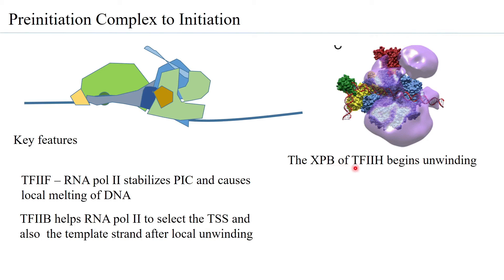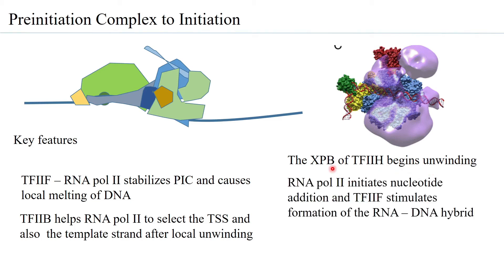The XPB of TF2H then begins unwinding, requiring ATP and its helicase activity. Because of the DNA opening first by TF2F and then finally by TF2H, the open complex is formed. Once the open complex is formed, RNA polymerase 2 initiates nucleotide addition and TF2F stimulates formation of the RNA-DNA hybrid.